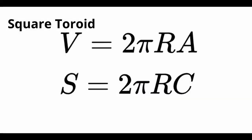Square toroid: The volume V and surface area S of a toroid are given by the following equations, where A is the area of the square section of side, and R is the radius of revolution.